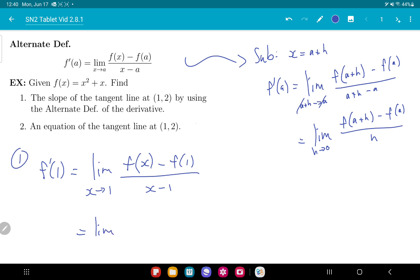f of x, that's my x squared plus x, minus f of one, which is two, all divided by x minus one.